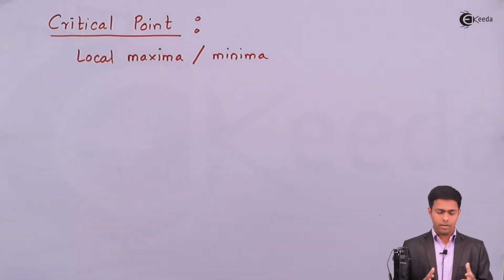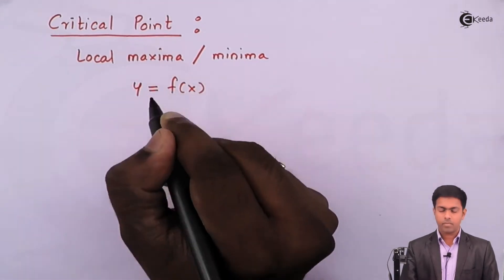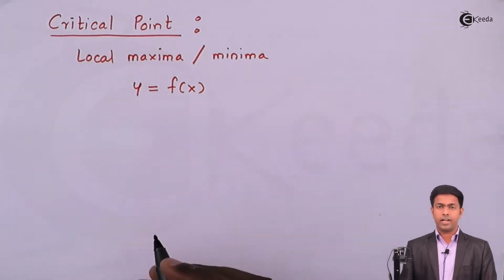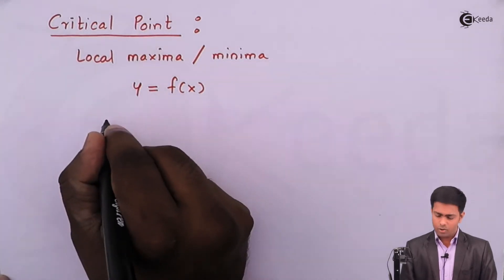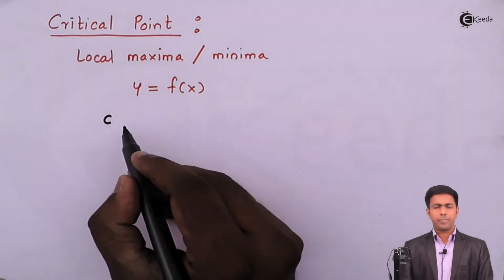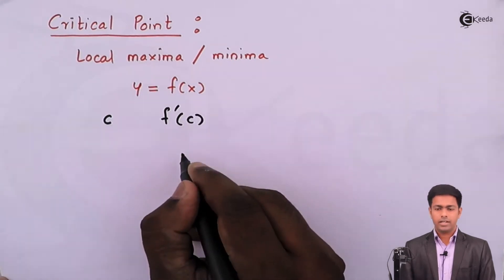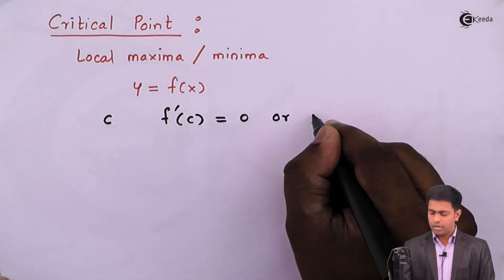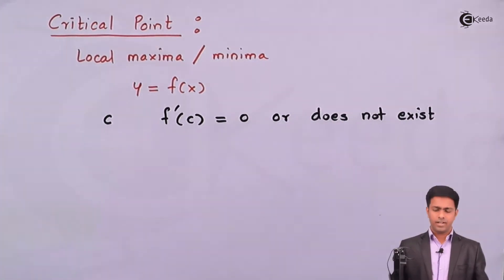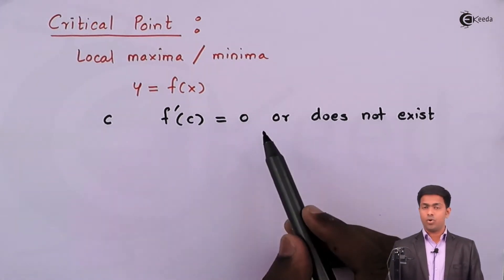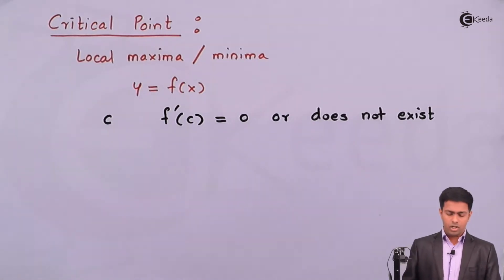How do you find the critical point? Let's say we have a curve y equal to f of x, and its derivative is f'(x). If at point c the value of f'(c) is equal to zero or does not exist — meaning it could be infinity — then that point c is called a critical point.